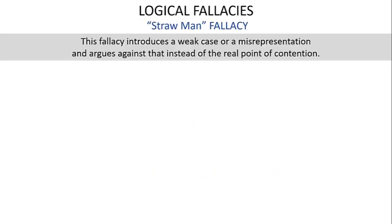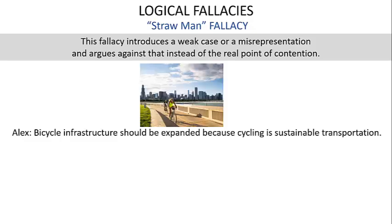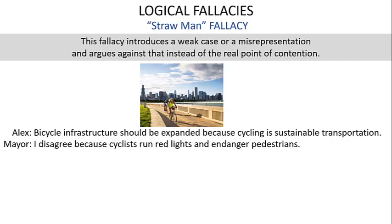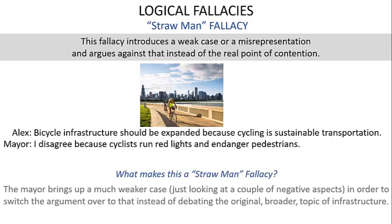The straw man fallacy introduces a weak case or misrepresentation and argues against that instead of the real point. Alex says: bicycle infrastructure should be expanded because cycling is sustainable transportation. The mayor says: I disagree because cyclists run red lights and endanger pedestrians. The mayor brings up weaker negative aspects to switch the argument away from the broader topic of infrastructure.